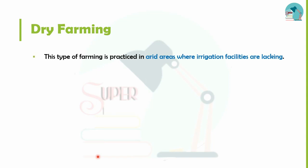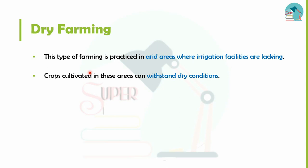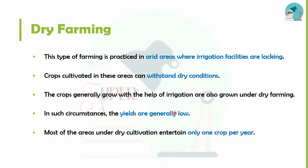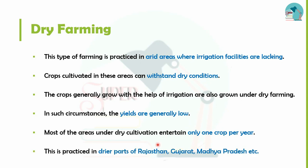Next is dry farming. Dry farming is practiced in dry areas where irrigation facilities are limited. The yield is very low, and only drought-tolerant crops are cultivated in these areas.